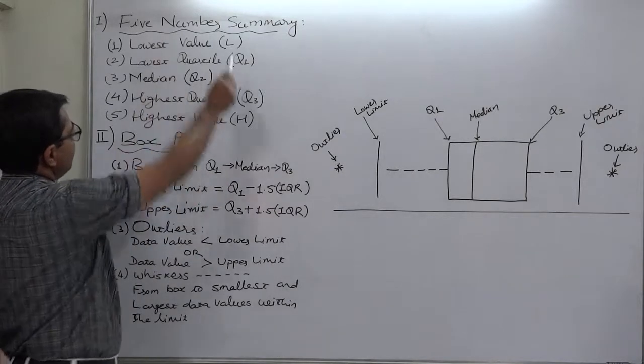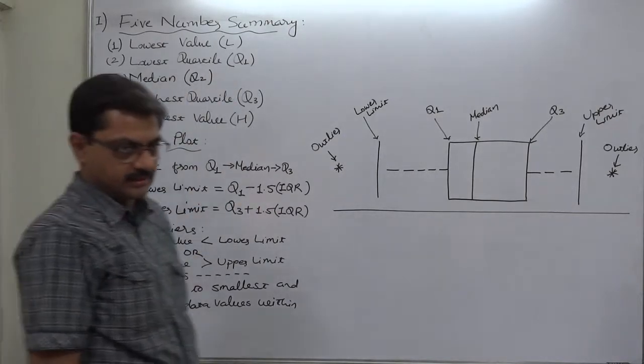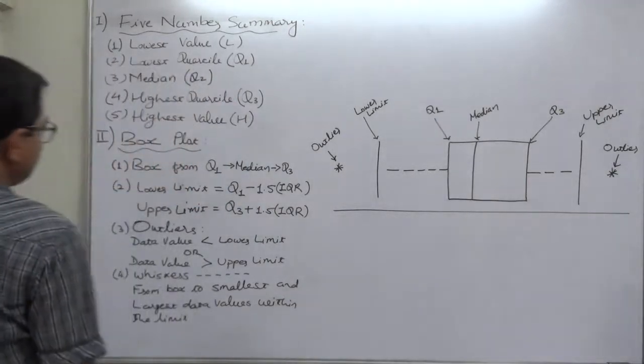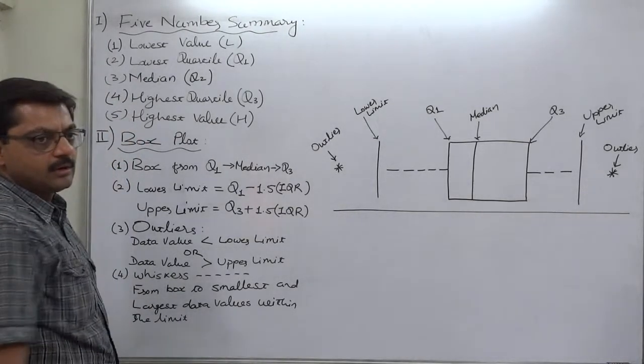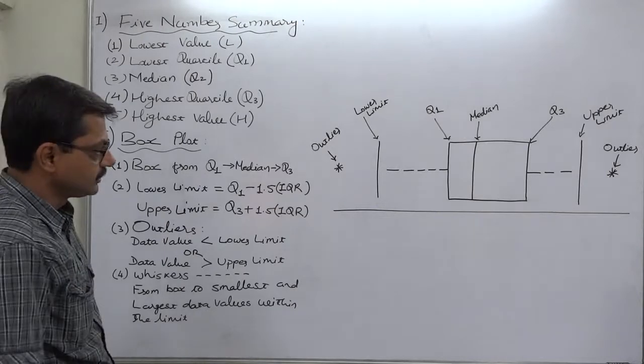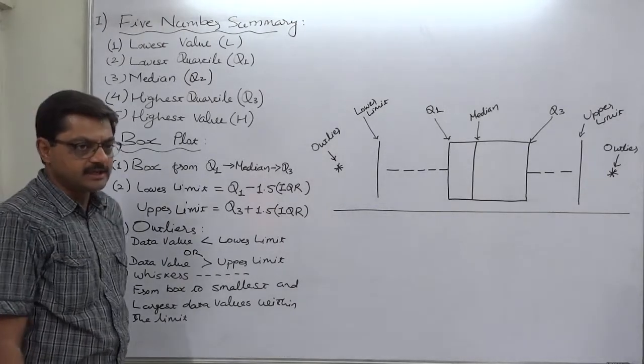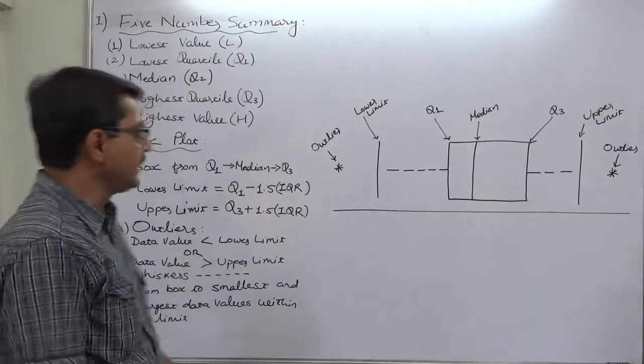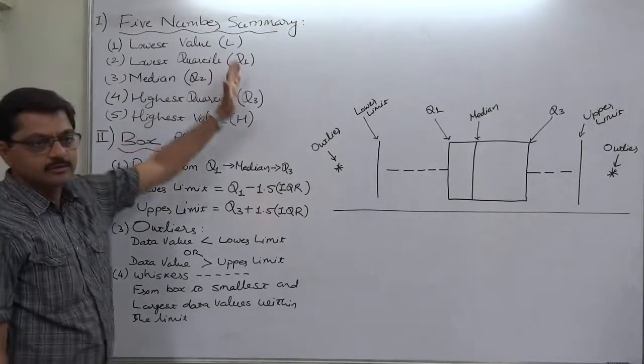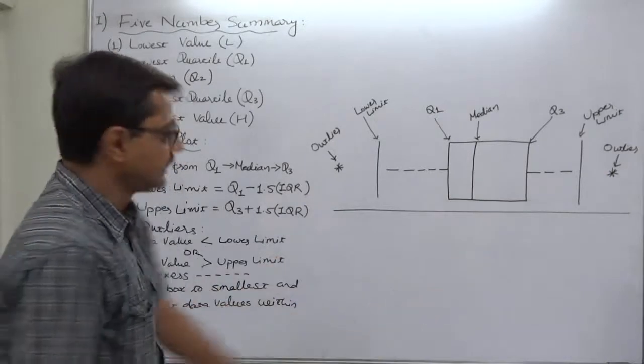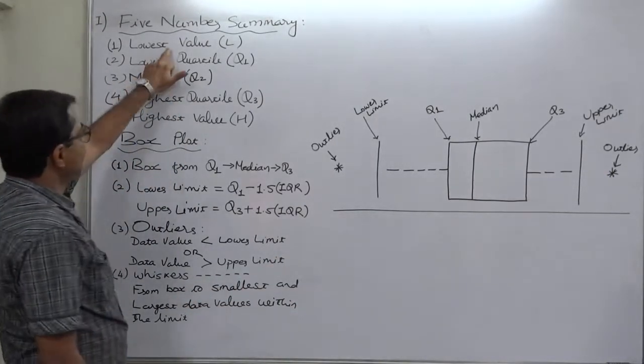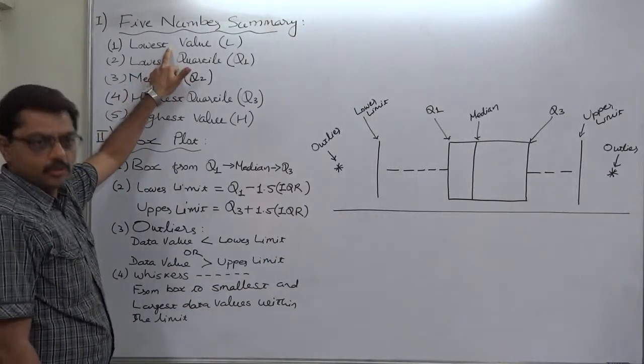One is known as five-number summary. In five-number summary, a list of five values is prepared from the list of the data values. For that purpose also, it is advisable or rather necessary to arrange all the data values in the ascending order. That means from the lowest to the highest. First is the lowest value or lowest data value.